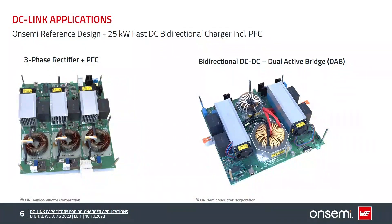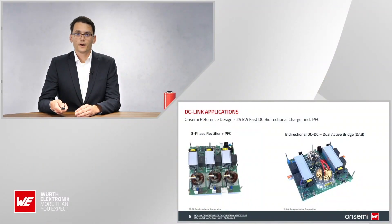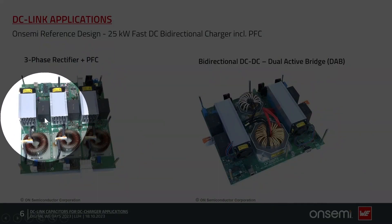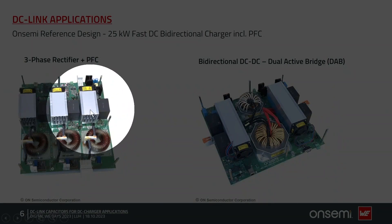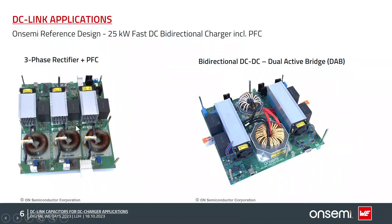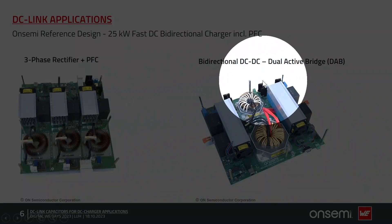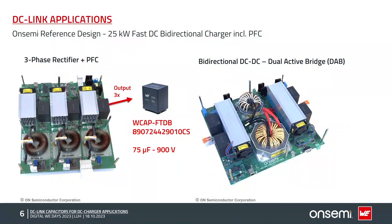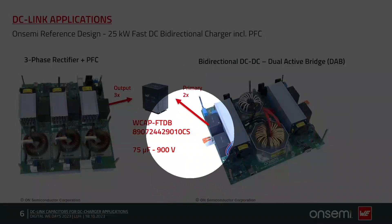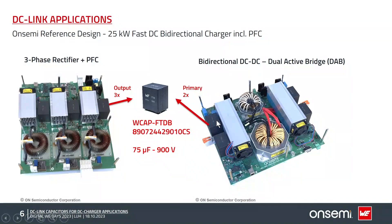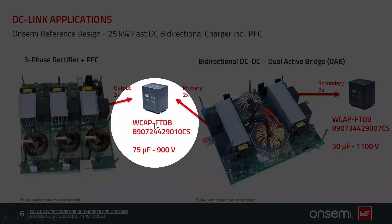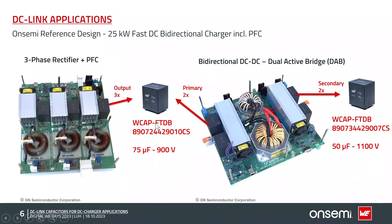Let's look at how the actual board looks. On the left-hand side you can see the three-phase rectifier with PFC and the three DC-Link capacitors. On the right-hand side you can see the bidirectional DC-DC dual active bridge. In total we have three output capacitors and two input capacitors from the dual active bridge, plus some output capacitors from the dual active bridge — so five capacitors in total building up the DC-Link capacitor.